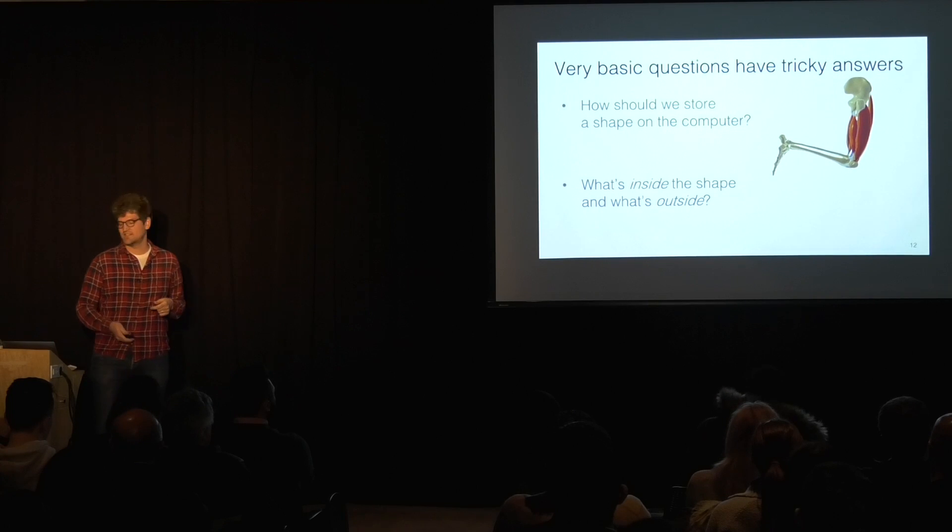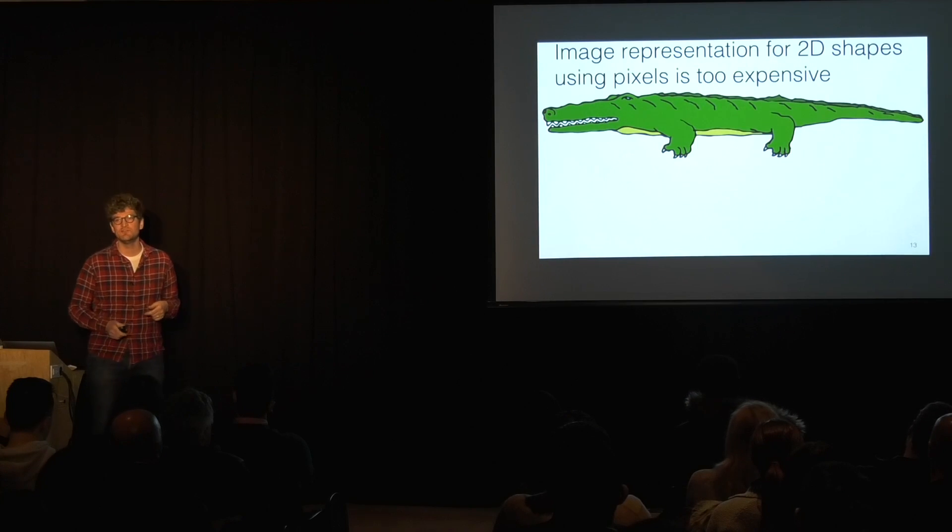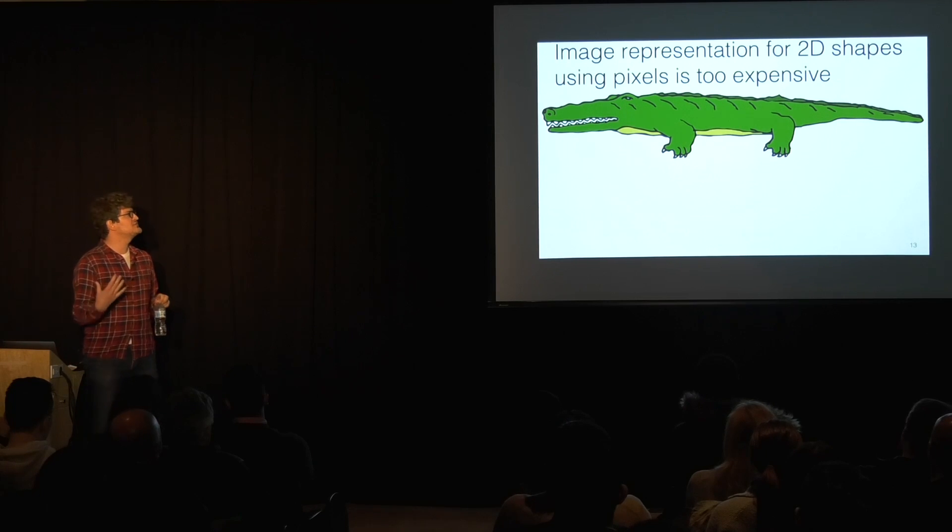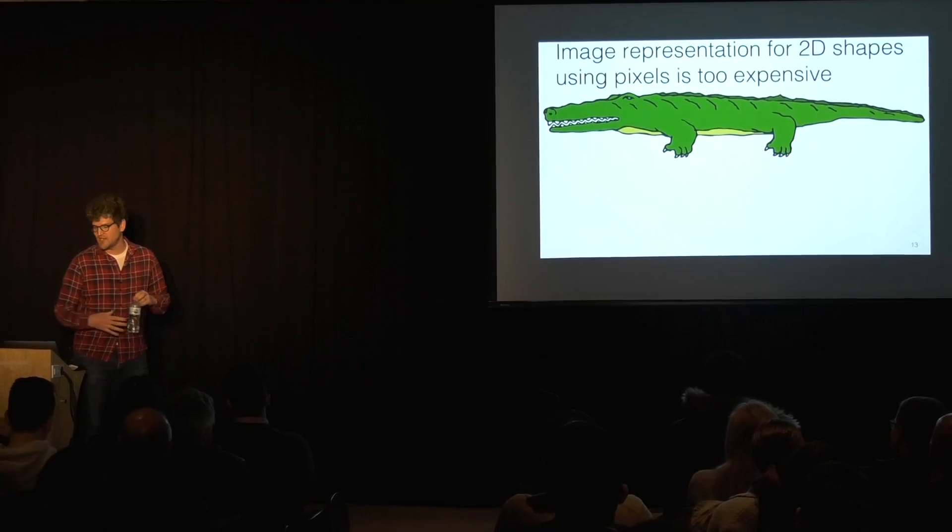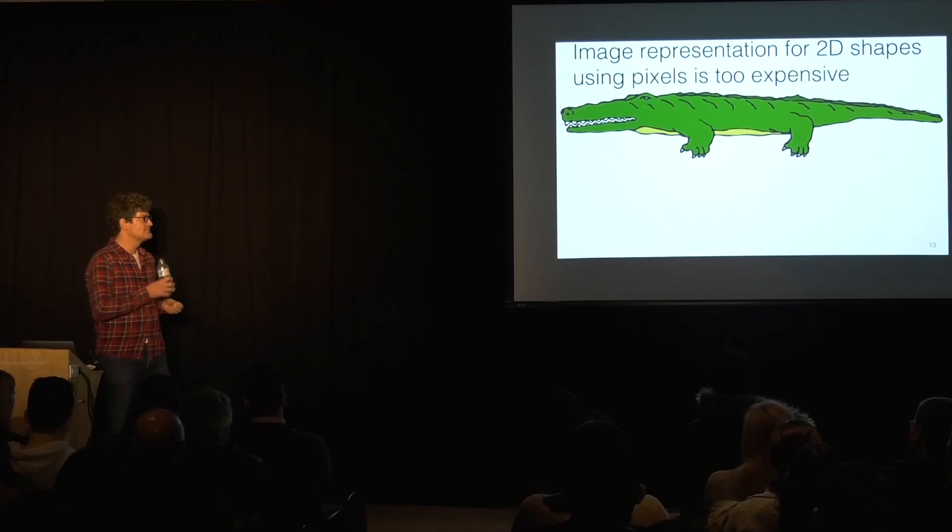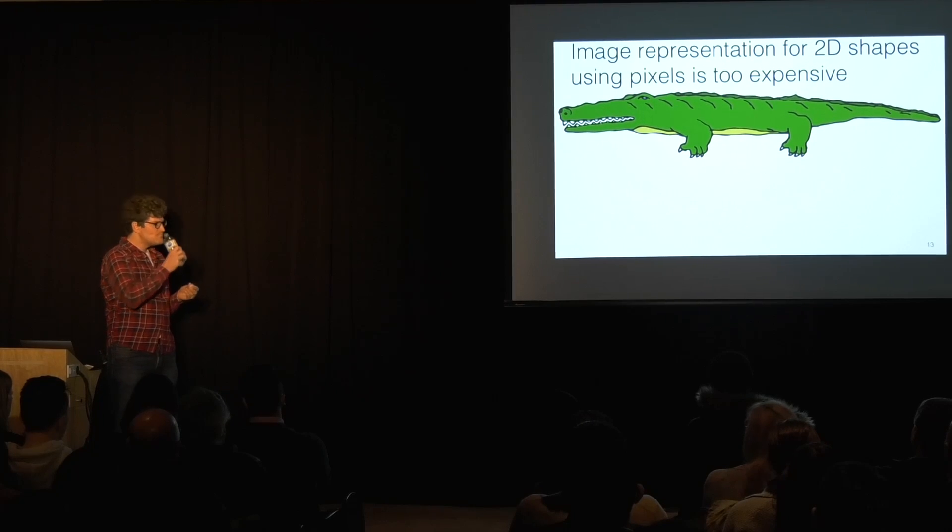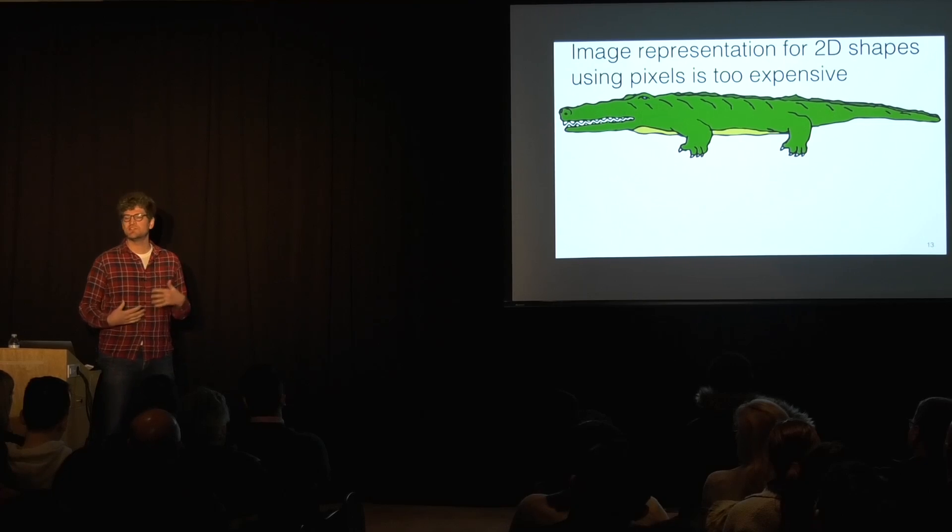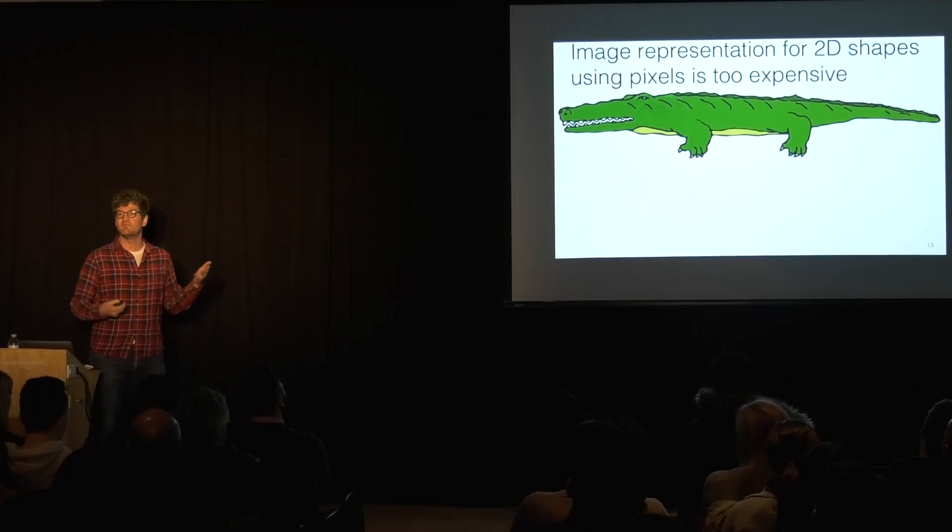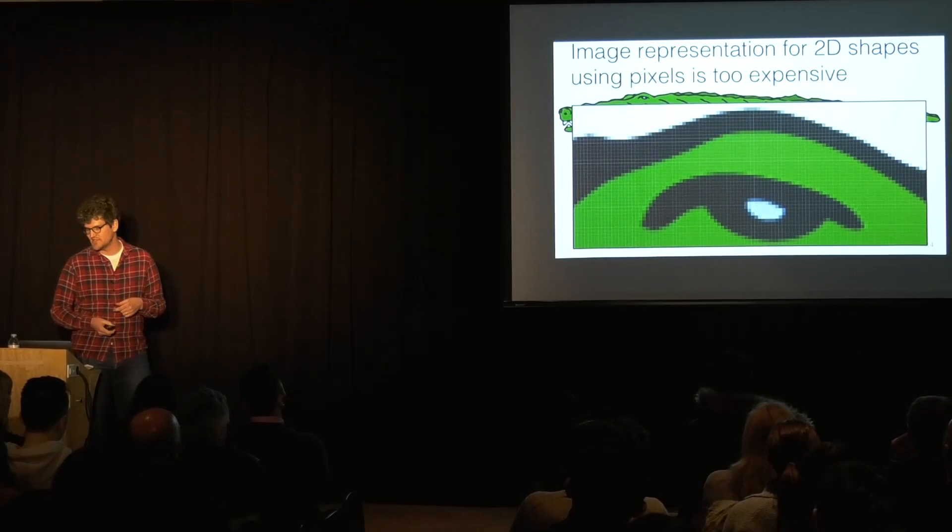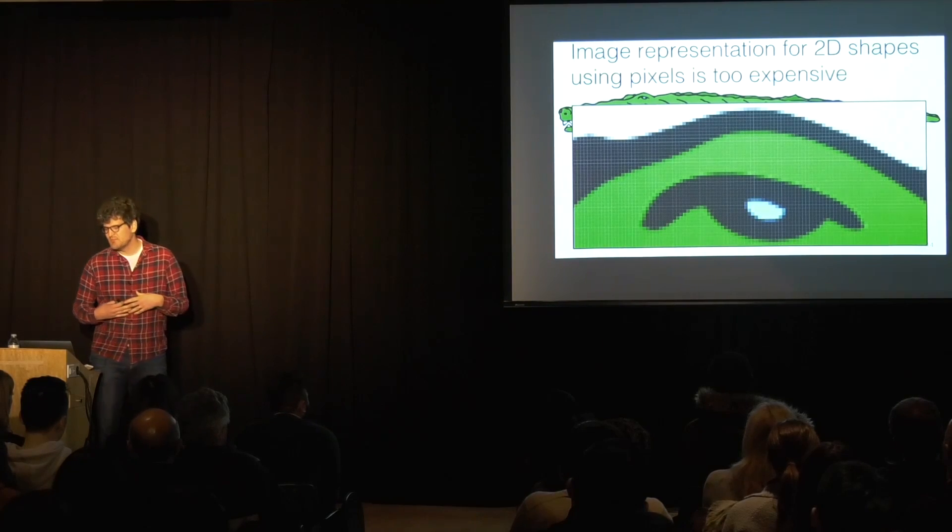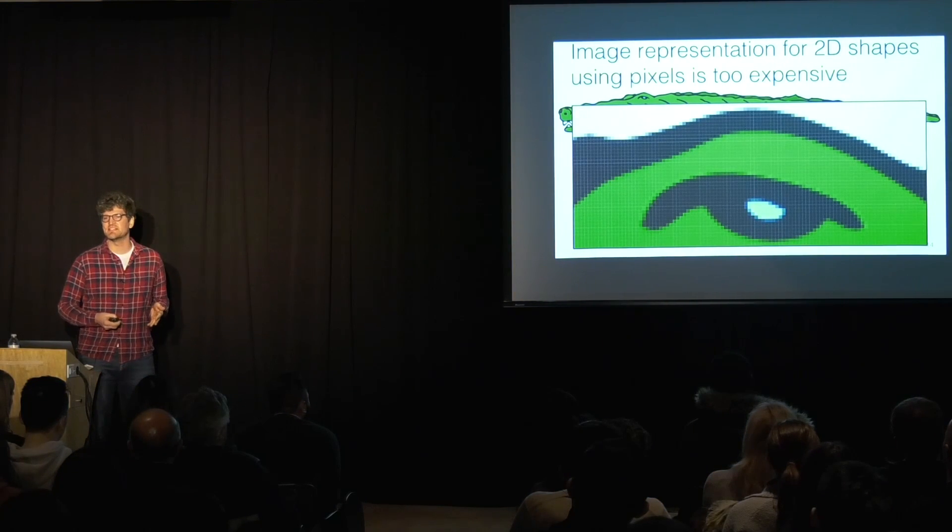So we can start this investigation by looking at two-dimensional shapes. So let's consider a 2D shape. This is a 2D shape of a cartoon alligator. Most of us are familiar with 2D shapes on the computer stored as images. So we could store this as a collection of pixels, small squares that store the color of the object.